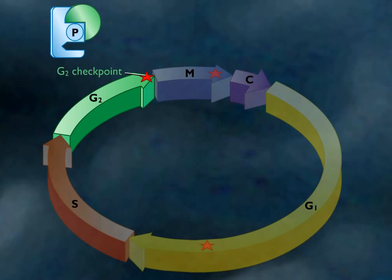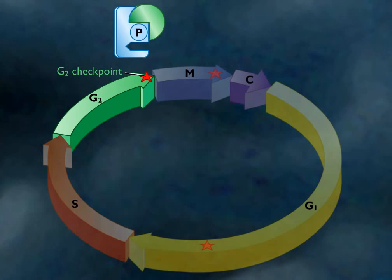When the level of MPF exceeds the threshold necessary to trigger mitosis, the G2 phase ends and mitosis begins.